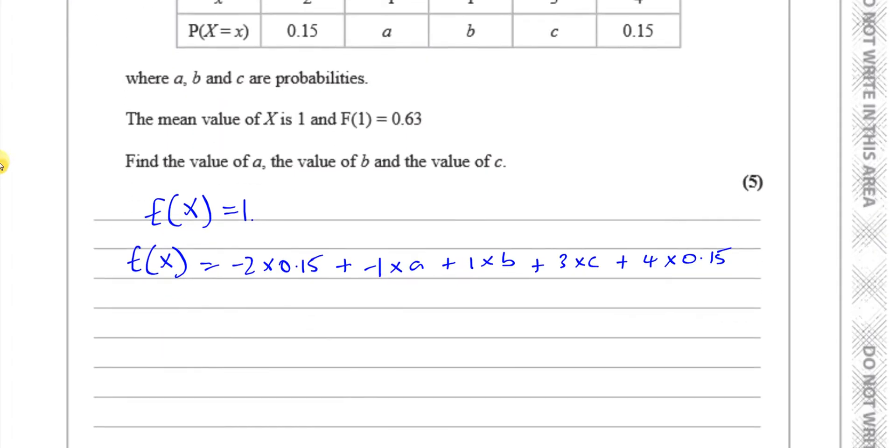This will give us, this is going to equal 1. So you have minus 2 times 0.15, which is minus 0.3, minus A, plus B, plus 3C, plus 4 times 0.15 is 0.6, and that all equals 1. If we tidy this up, you have minus A plus B plus 3C plus 0.3 equals 1. So you can say minus A plus B plus 3C equals 0.7. So we have formed an equation from this fact.